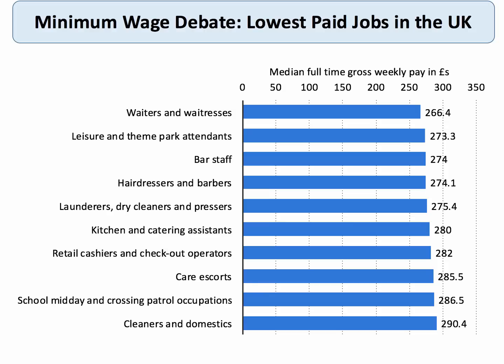We know that in the UK, for example, there's a huge dispersion — enormous variation in average gross weekly pay across jobs. This data is taken from 2015; it's the lowest paid jobs in the UK, the median full-time gross weekly pay before deductions. All of these jobs' full-time pay is less than £300 per week, including median pay — the middle value in the distribution for waiters and waitresses of less than £270 a week. So clearly the minimum wage issue is very pertinent, very topical, and one that economists can get their teeth stuck into.